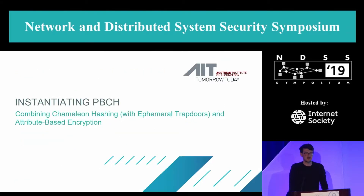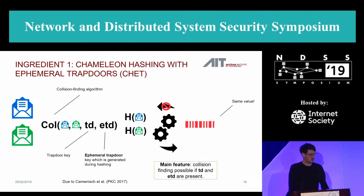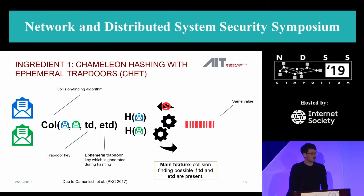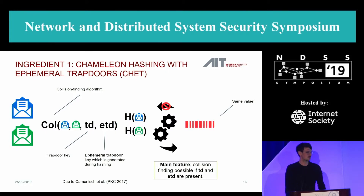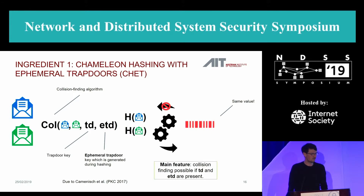Coming to the instantiation of PBCH: we combine chameleon hashing with an ephemeral trapdoor (CHAT) and attribute-based encryption (ABE). In CHAT, there is an additional input to the collision-finding algorithm called the ephemeral trapdoor. You can think of a long-term trapdoor TD and an ephemeral trapdoor ETD, which is generated during hashing — due to the result of Camenisch et al. from PKC 2017. The main feature is that collision finding is possible only if both the long-term trapdoor key and the ephemeral key are present.